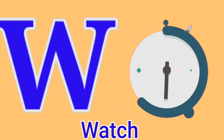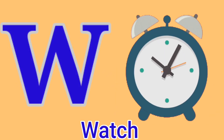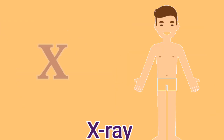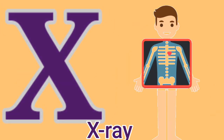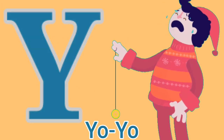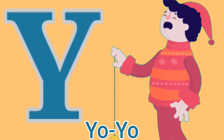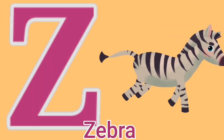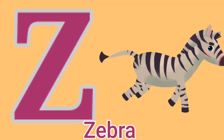V for Van, W for Watch, X for X-ray, Y for Yak, Z for Zebra.